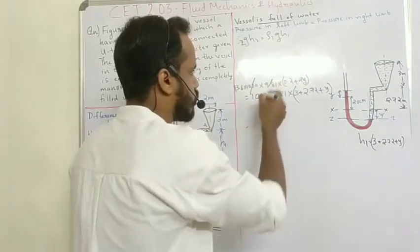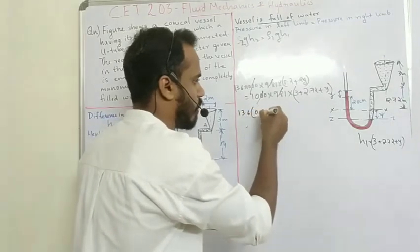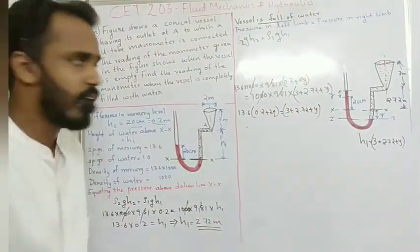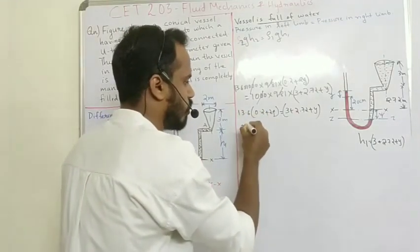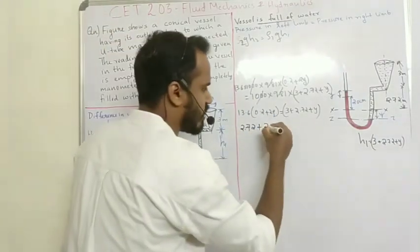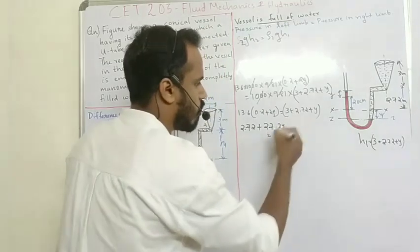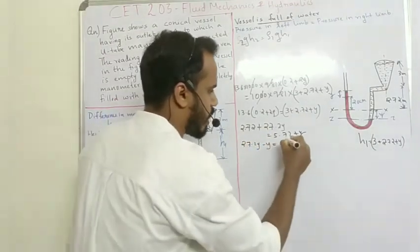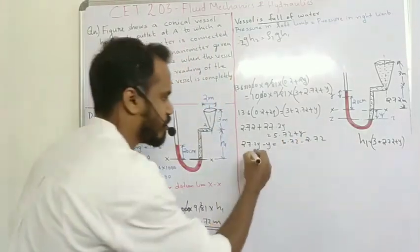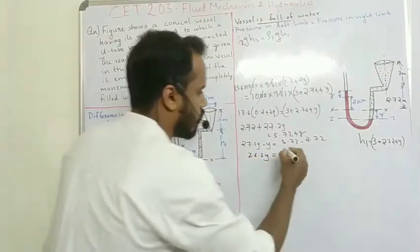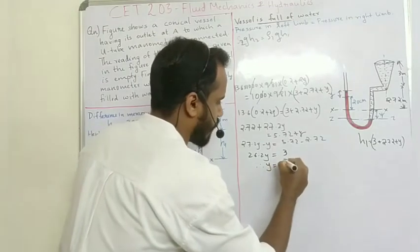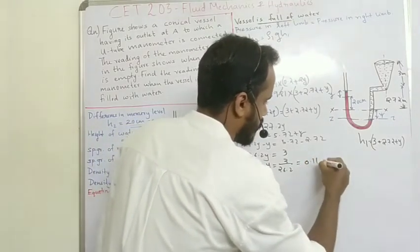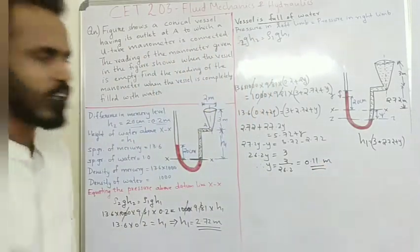Cancelling 9.81 and 1000, the equation becomes: 13.6 × (0.2 + 2y) = 2.72 + y. Expanding: 2.72 + 27.2y = 2.72 + y. Rearranging: 27.2y minus y equals 5.72 minus 2.72, so 26.2y equals 3. Therefore y equals 3 divided by 26.2, which equals 0.1111 meters.